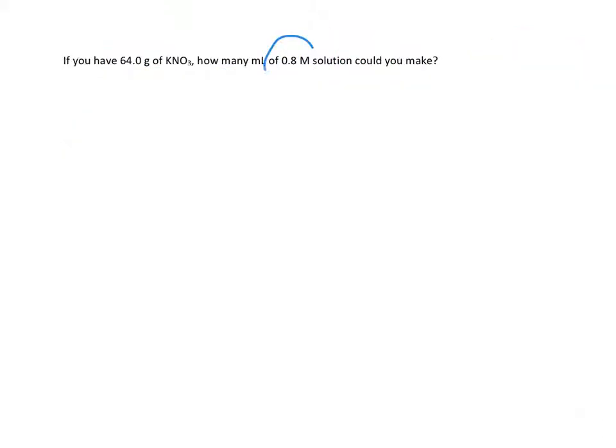Last problem. Okay, I have my concentration. I want to know how much volume I can make. So now I'm looking for the bottom part of this equation. I know 0.8 is my molarity, and I want to know how many milliliters I can make. So that's the bottom part, except that's going to be in liters, remember. But I don't have the top part. I know 64 grams of this, but again, that's in the wrong units. I have to get that to moles.